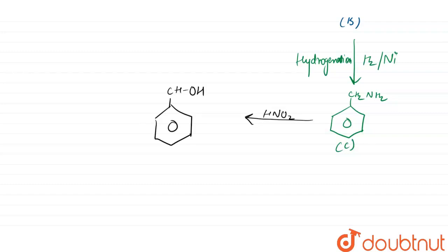As you can see, this is product D. Can we write it as like this, that is C6H5CH2OH. This is the product that is formed.